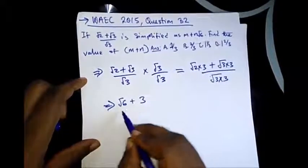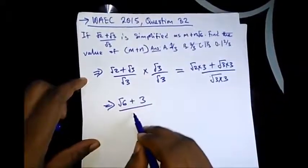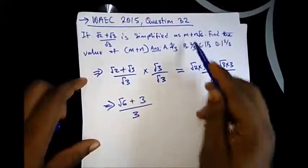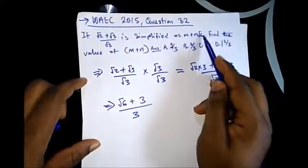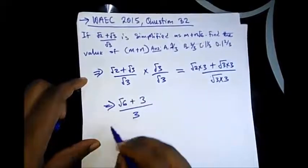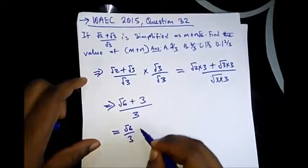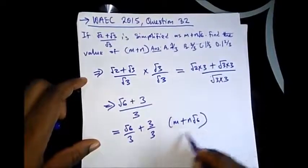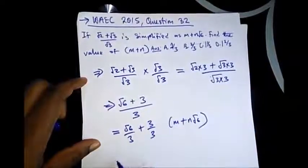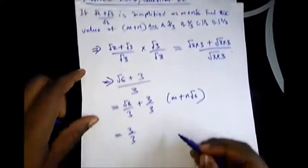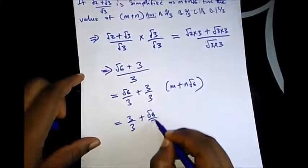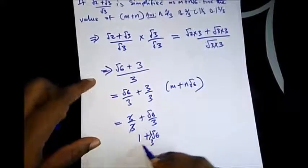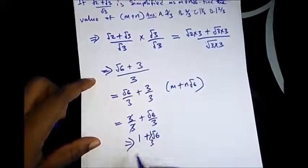Over 3×3=9, the root of 9 is also 3. So from here, let's say we should simplify it as m + n√6. So let's further break this down. We have √6/3 + 3/3. Let's make this look like this particular equation, so we have 3/3 + √6/3.